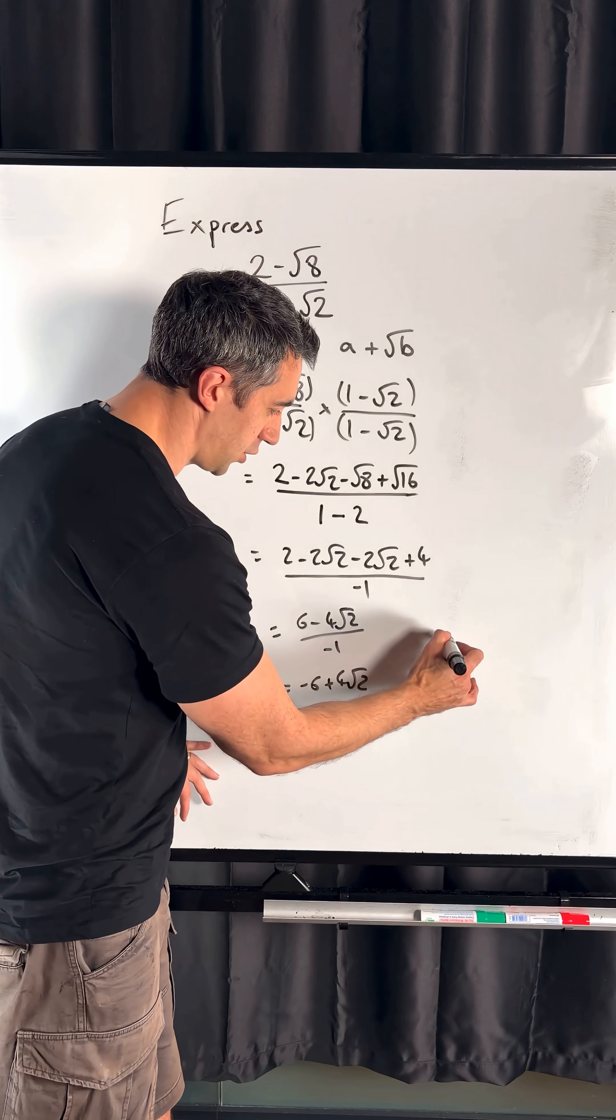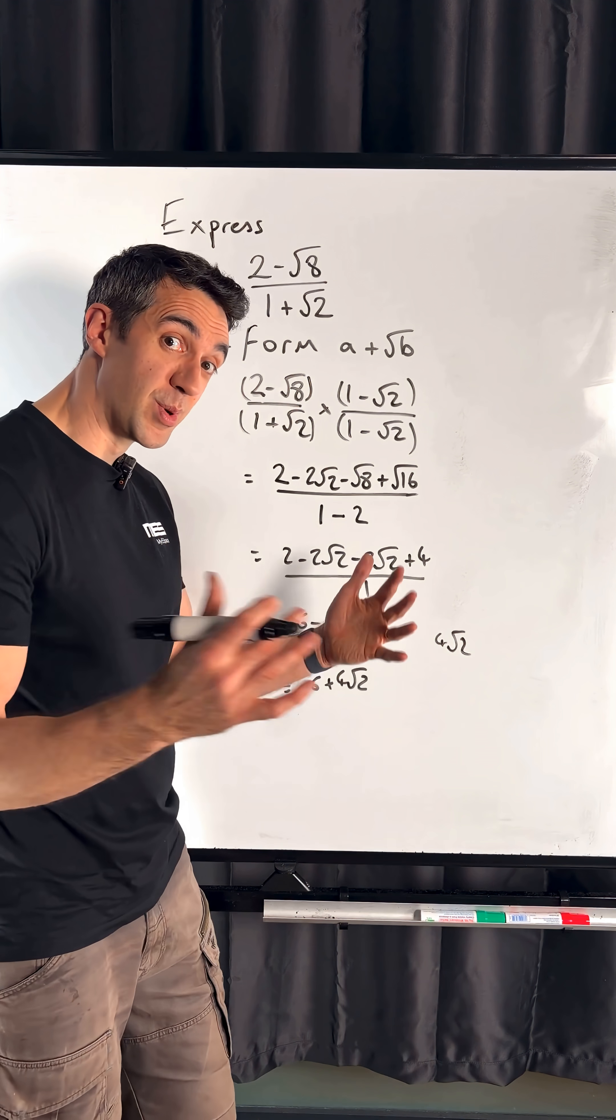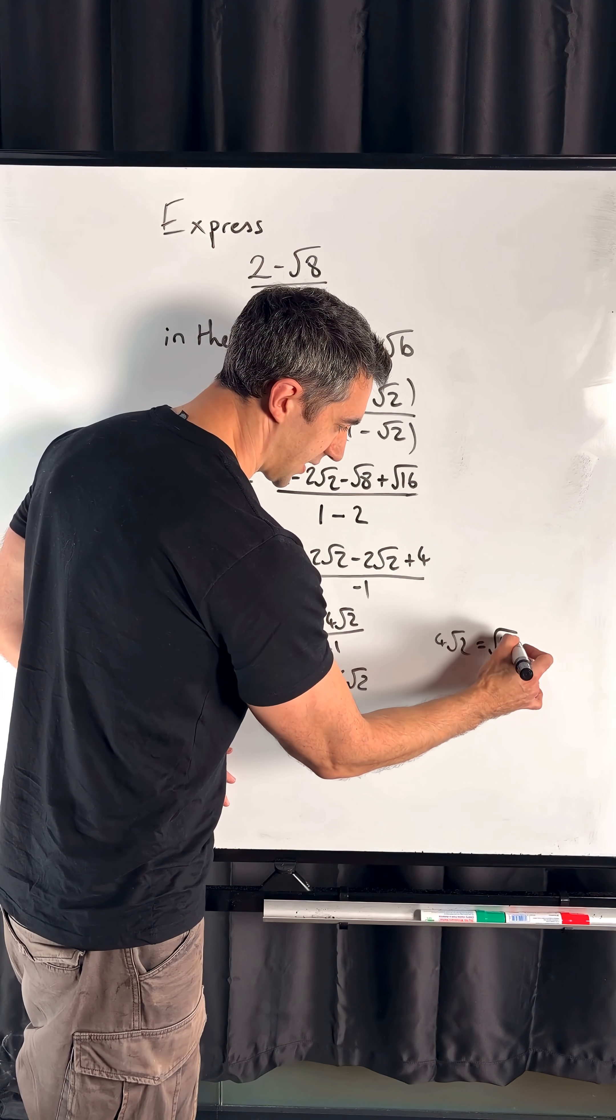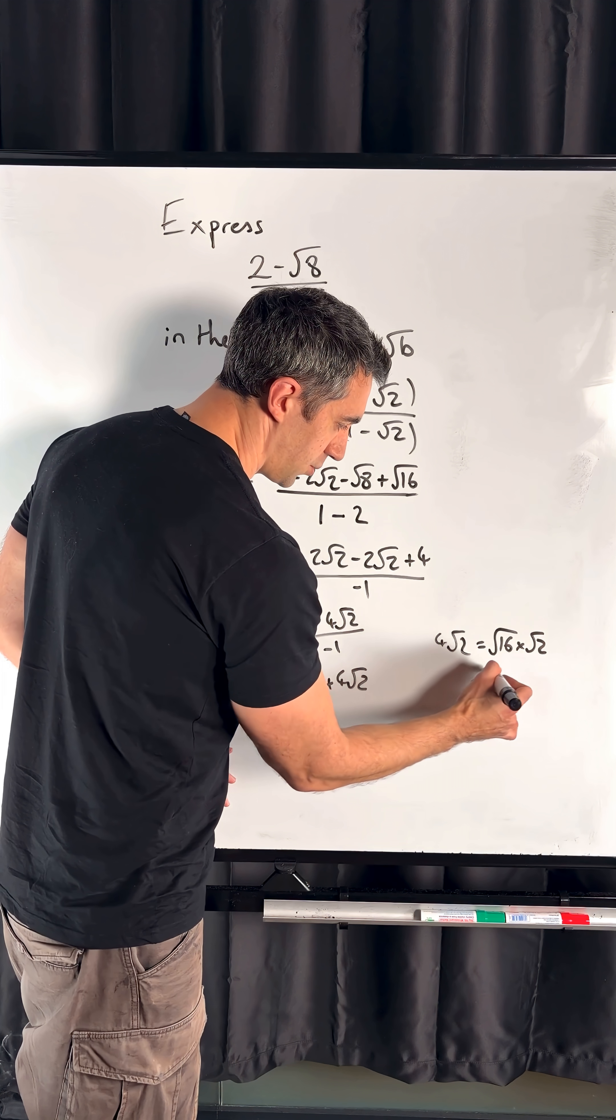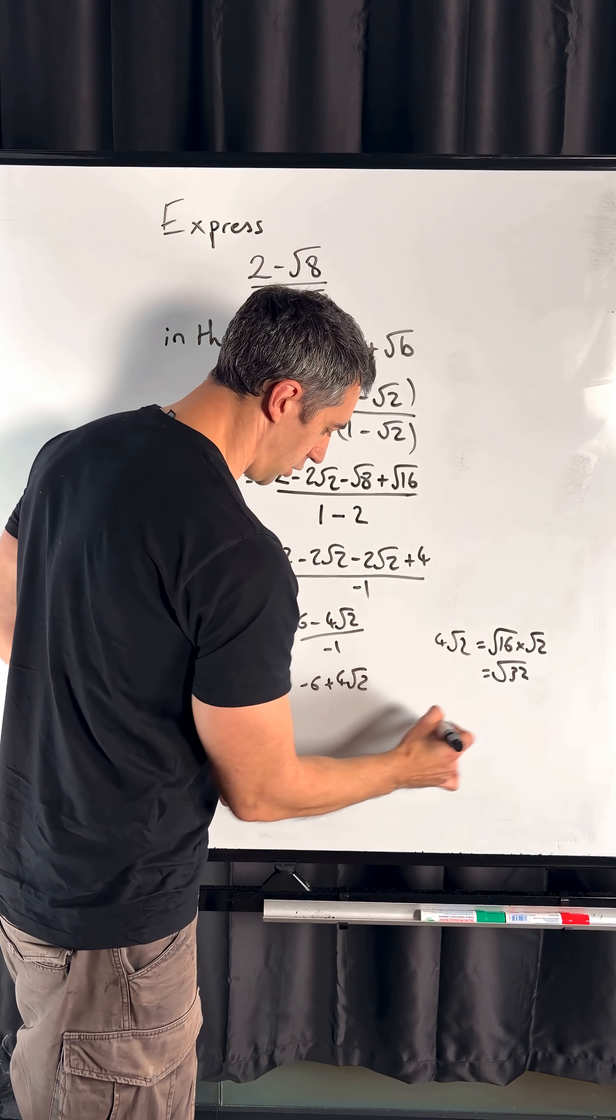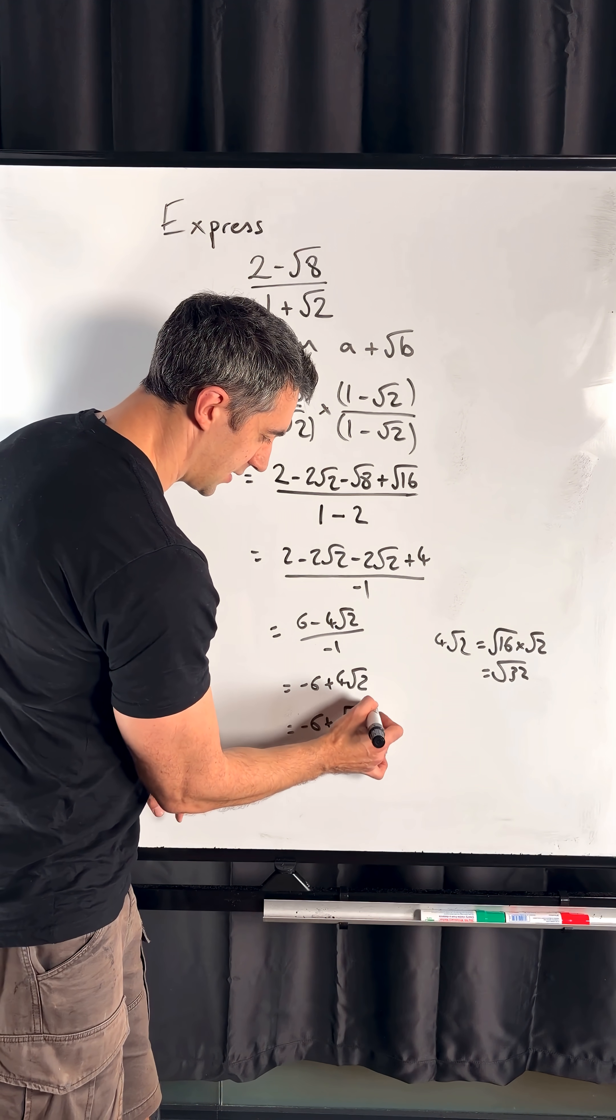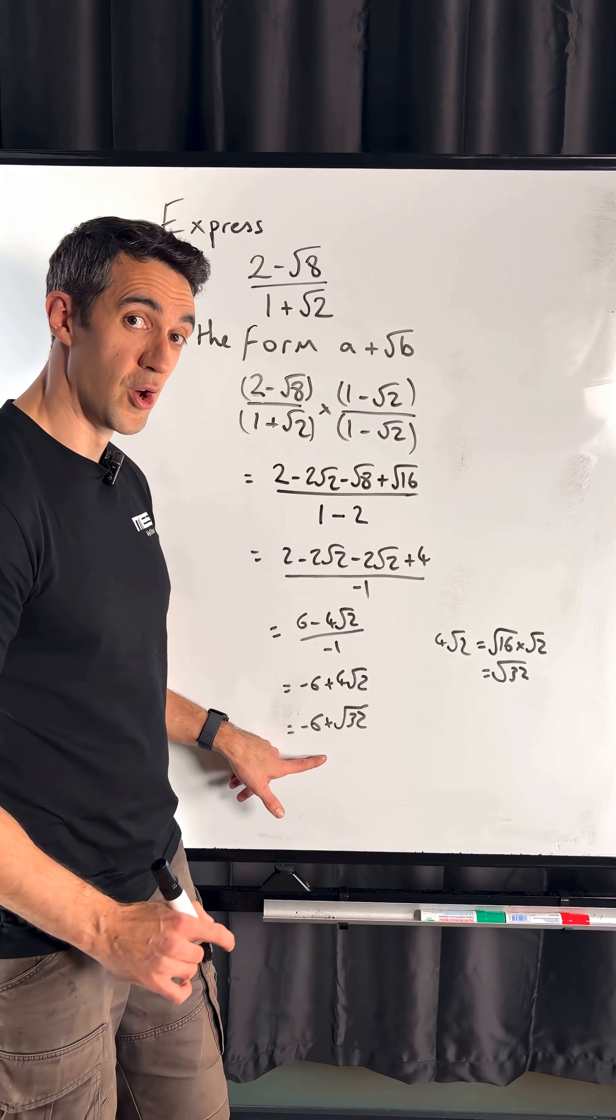So this 4 root 2, we need to unsimplify, if you like, and put it back under a single root. So 4 we can write as root 16 times root 2, which is root 32. So my final correct answer is minus 6 plus root 32.